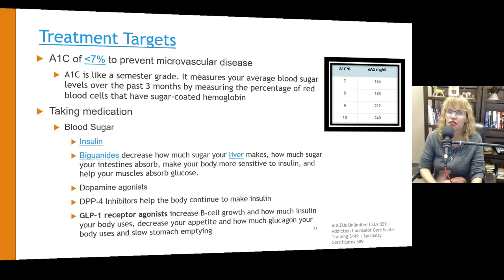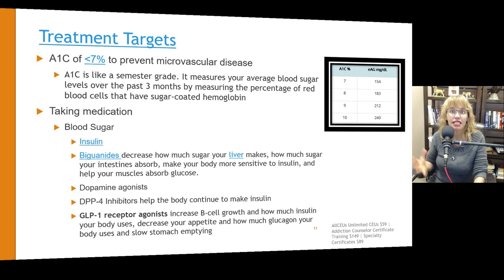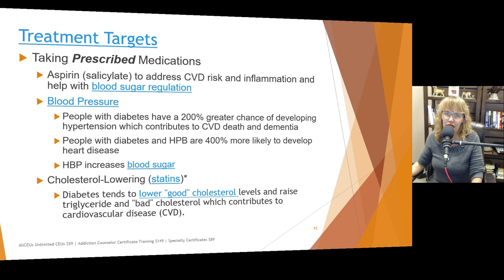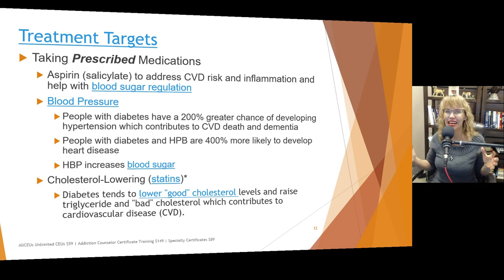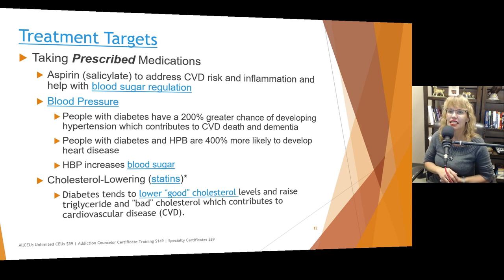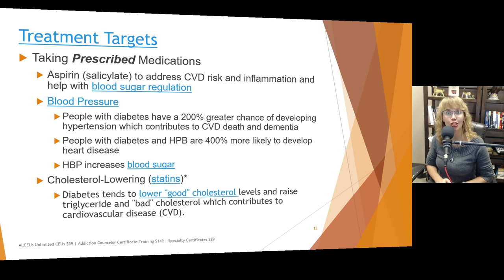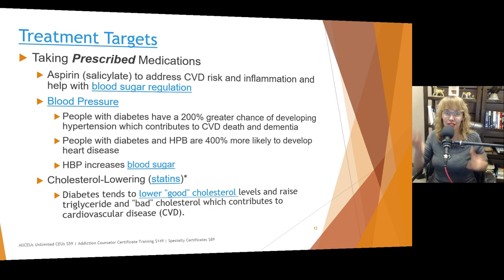It's important that people figure out how they can make sure they have their medication with them when they need it, that they're taking the right amount, and that they deal with any side effects. Other prescribed medications — and I emphasize prescribed — we don't want people randomly deciding to take aspirin for cardiovascular risk without physician clearance. Interestingly, salicylate is often used to address cardiovascular risk and inflammation, and has also been shown to help with blood sugar regulation — which is another reason why random aspirin use could alter blood sugar levels or reactivity, meaning other medications may need to be adjusted.